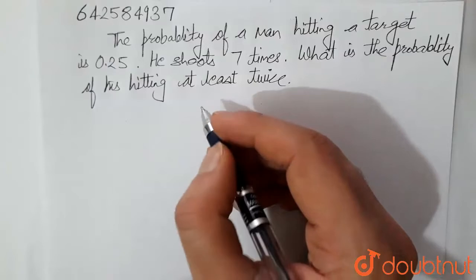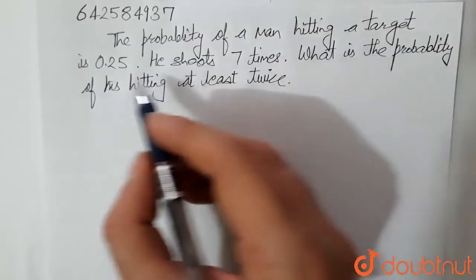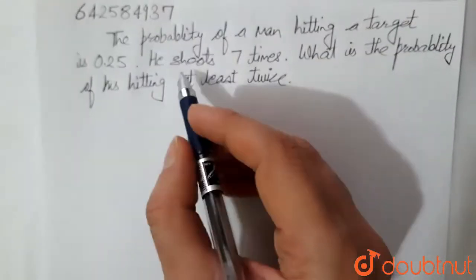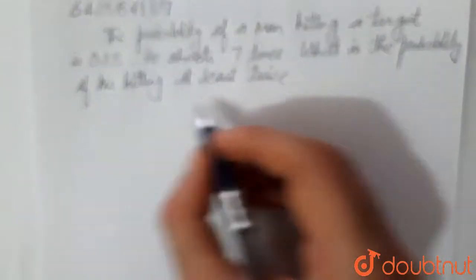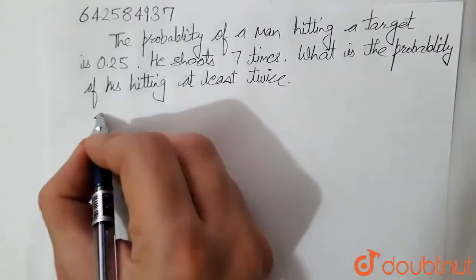So the question is, the probability of a man hitting the target is 0.25. He shoots 7 times. What is the probability of his hitting at least twice? Let's look at the solution.